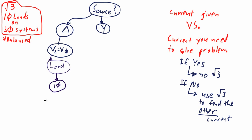With these two distinctions in mind, if the current provided is the current we're going to use, being that it's the current identified by the way the load is connected, then no root three is needed. If not, then we need to apply the root three.